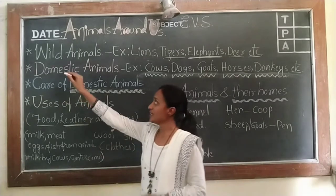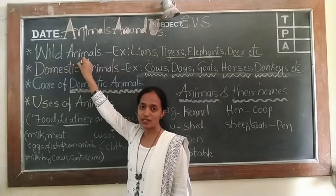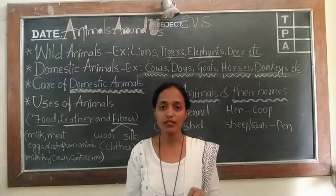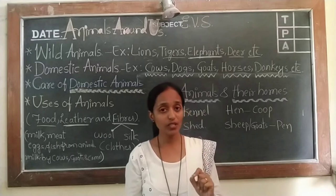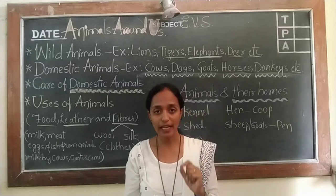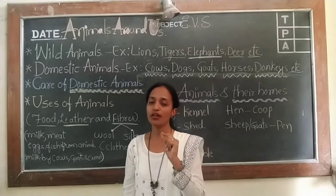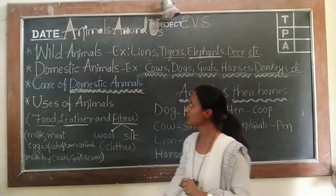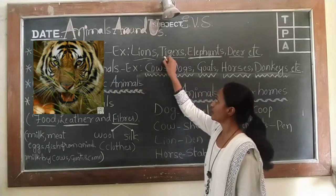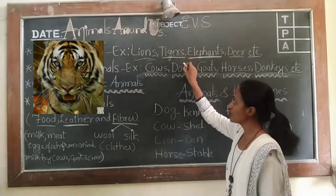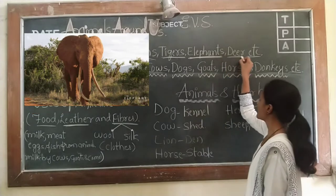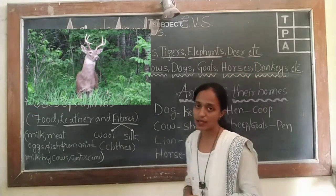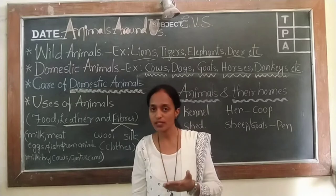Let us know about wild animals — animals living in the forest. Animals living in the forest are called wild animals. Examples: lions, tigers, elephants, deer, etc. These are the examples of wild animals.